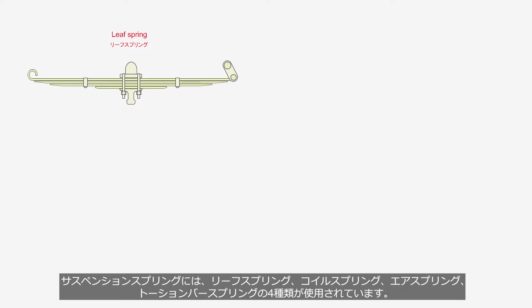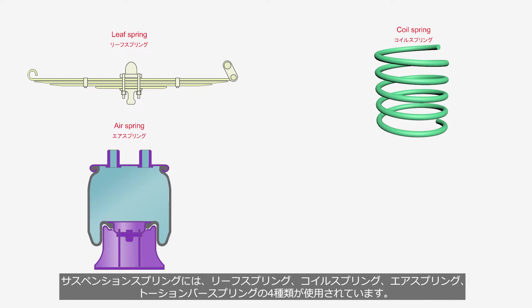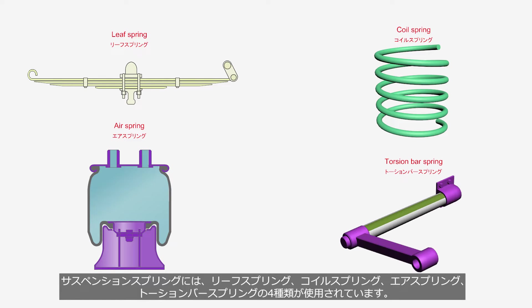Suspension springs come in four types: leaf springs, coil springs, air springs, and torsion bar springs.